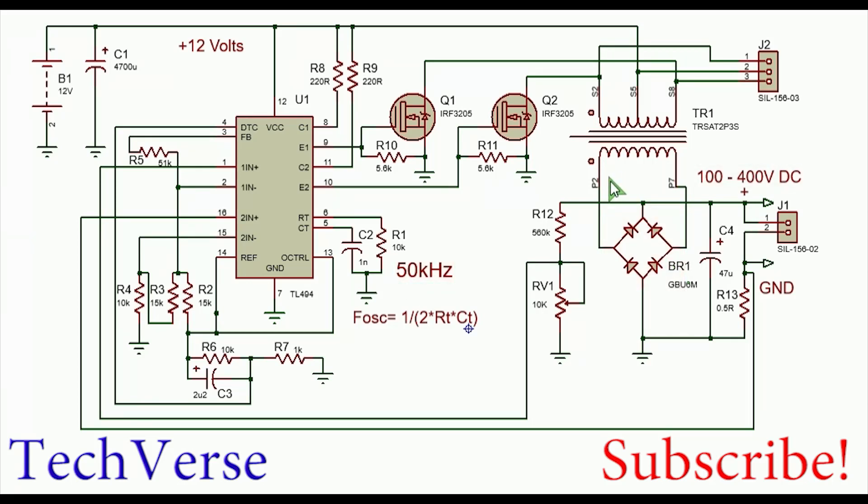On your secondary side you have this bridge rectifier which rectifies the high frequency AC or even low frequency AC, so that you have a nice DC voltage here. This is the one which is sensed by this resistor divider network for feedback regulation.